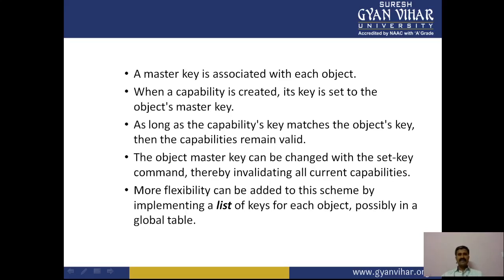Revocation replaces the master key with a new value via the set-key operation, invalidating all previous capabilities for that object. This scheme does not allow selective revocation, since only one master key is associated with each object. However, if we associate a list of keys with each object, selective revocation can be implemented. Finally, we can group all keys into one global table of keys — a capability is valid only if its key matches some key in the global table, and revocation is implemented by removing the matching key from the table.